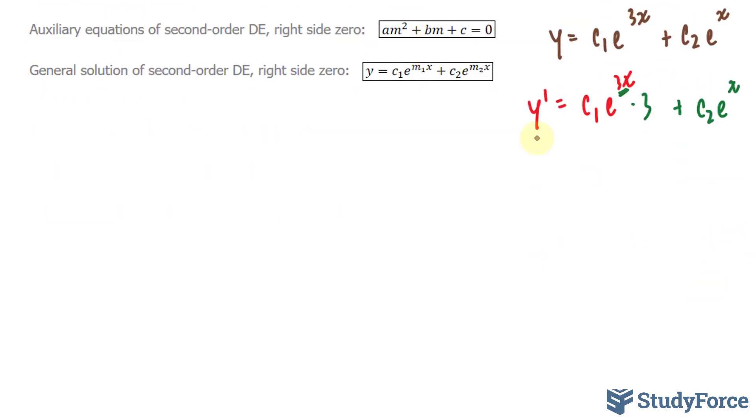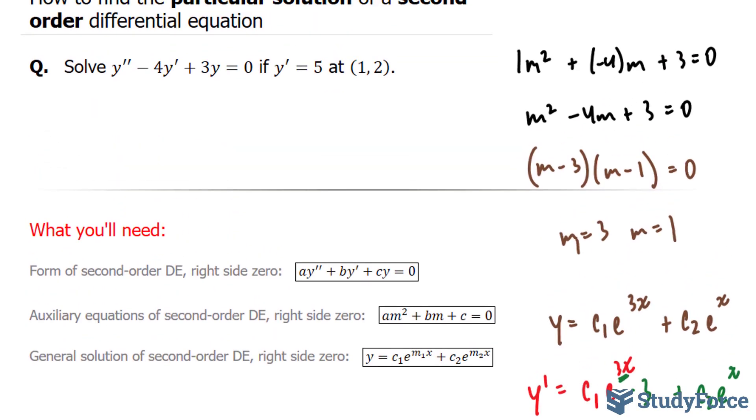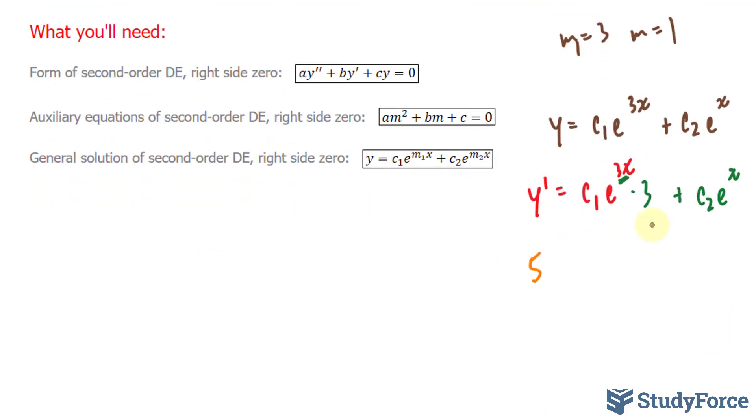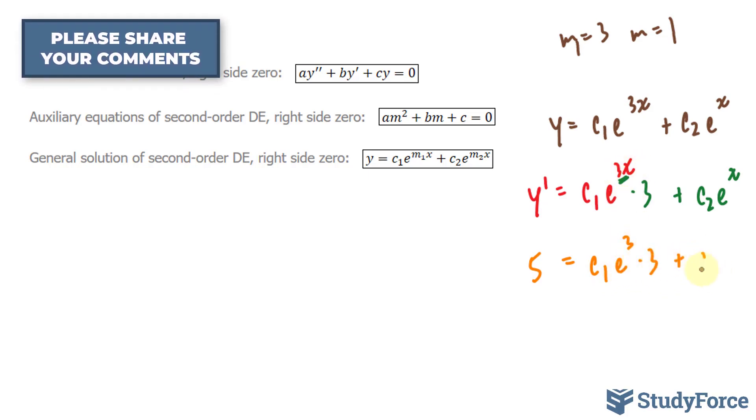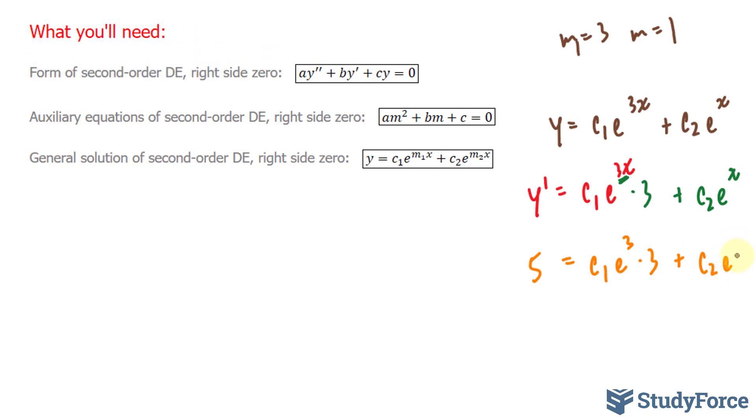I'll substitute 5 into here, and our point was (1, 2). So I'll substitute 1 into these x's, we have c subscript 1, e to the power of 3 times 1 is e to the power of 3 times 3 plus c subscript 2, e to the power of 1 is simply e. I'll leave this equation like that for now.